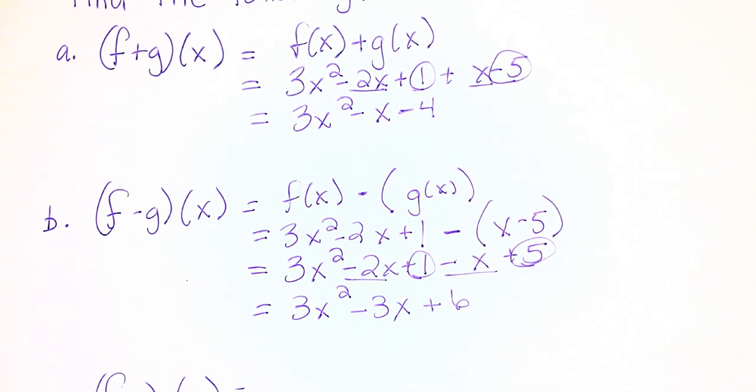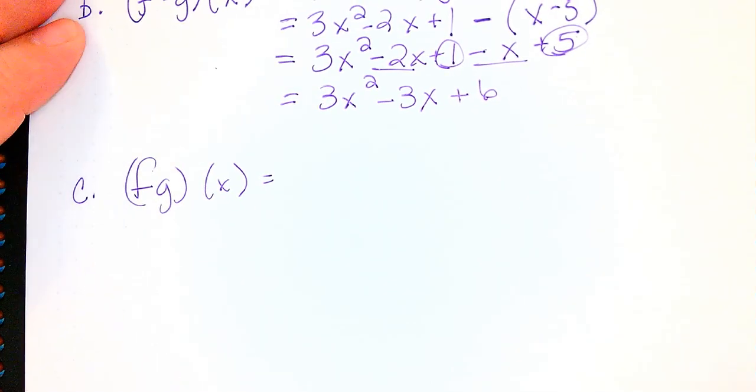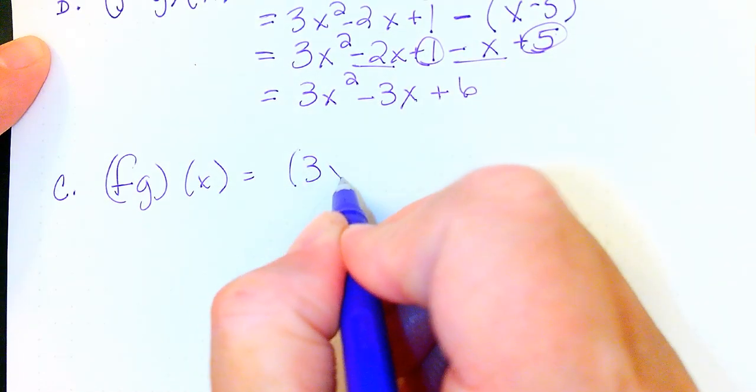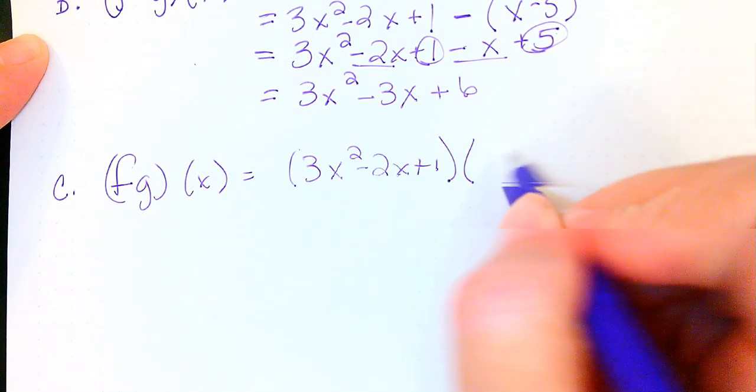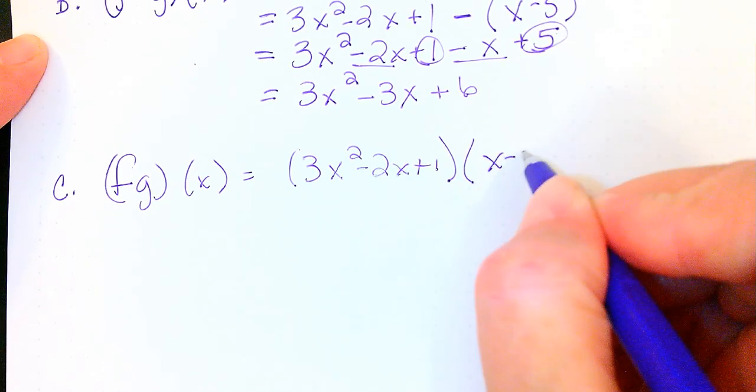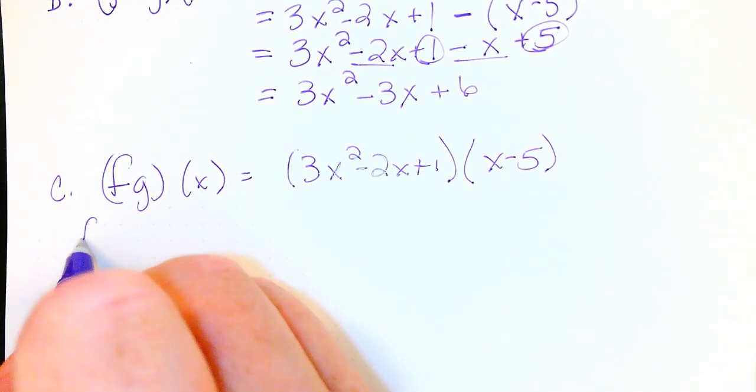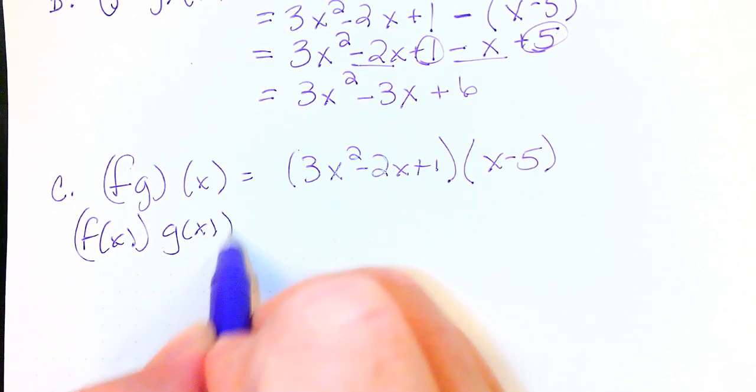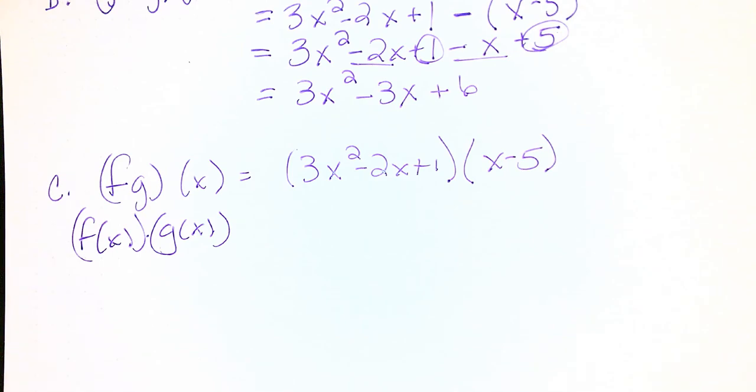Let's continue on with (f × g)(x). This will be f(x), which is 3x² - 2x + 1 times g(x), which is x - 5. So you can rewrite this as f(x) times g(x). You can use either big parentheses or even a little dot here to represent a multiplication sign.